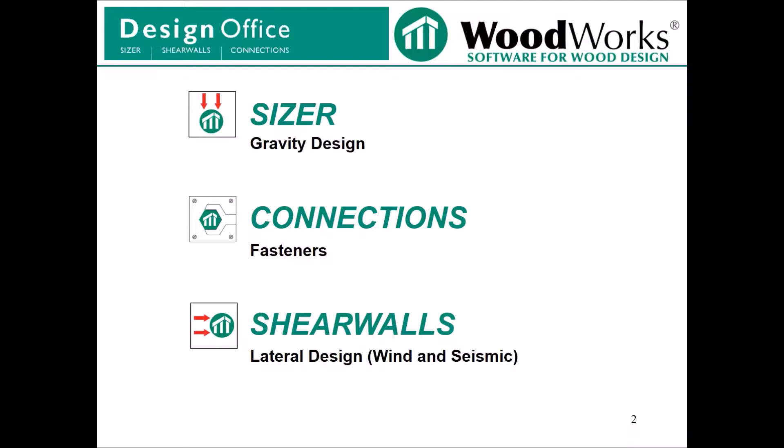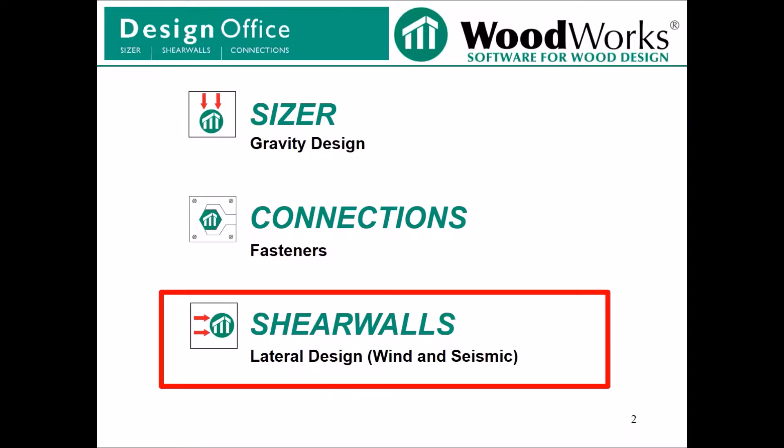Shear Walls will automatically generate wind and seismic loads following ASCE 7-10 based on input climatic data. The program will then distribute these generated loads to shear lines based on both flexible and rigid diaphragm assumptions. This video will only touch on the topic of wind loads in relation to the Shear Walls program.